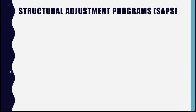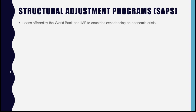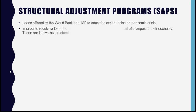These sets of changes were known as structural adjustment programs, or SAPs. These loans were offered by the World Bank and IMF to countries experiencing extreme economic crisis and carrying a lot of debt. In order to receive the loan, the receiving countries had to agree to these structural adjustment programs. Key changes included liberalization of markets — basically opening up their markets to foreign interests and reducing tariffs and other barriers to trade.